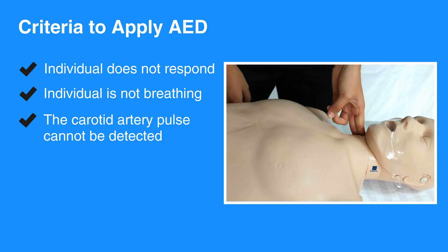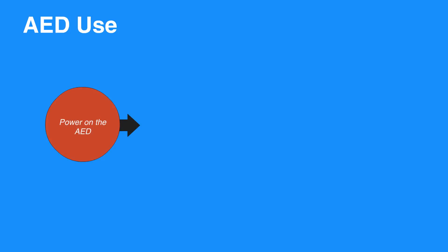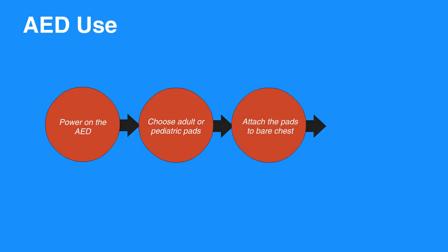Let's review the basic steps of using an AED. First, power on the AED. Choose adult or pediatric pads. Attach the pads to the bare chest and make sure cables are connected. Be sure not to attach the pads over any medication patches, and dry the chest if necessary.